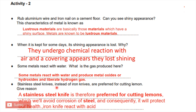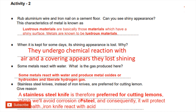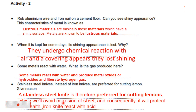Stainless steel knives instead of iron knives are preferred for cutting lemon. We use stainless steel to prevent corrosion. This is why we need to remove oil from silver to prevent corrosion, and why we clean iron knives to reduce damage and protect our health.